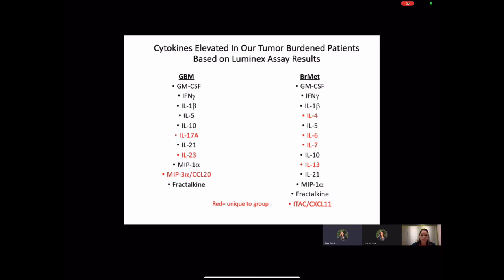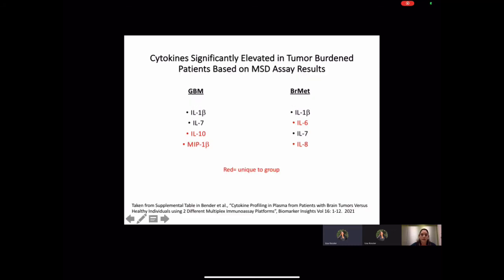In comparison, the MSD platform only detected five analytes that were significantly elevated in tumor burden patients. This seems strange for a platform that was having a higher sensitivity. We would expect such few biomarkers. Again, I noted in red those analytes that were unique to the study groups that were elevated uniquely to either glioblastoma or brain metastasis patients.